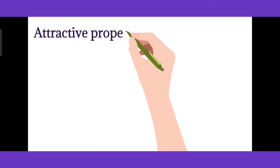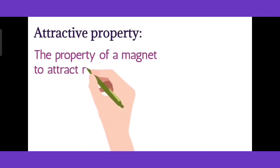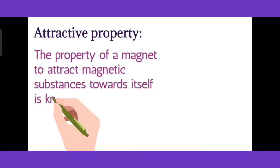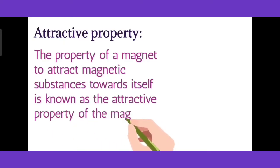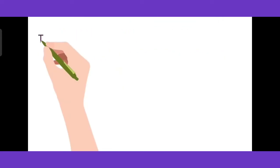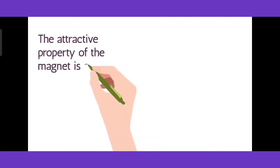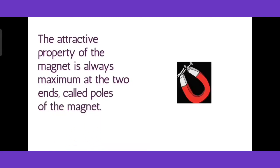Next is Attractive Property of Magnet. The property of a magnet to attract magnetic substances towards itself is known as the Attractive Property of the Magnet. The Attractive Property of the Magnet is always maximum at the two ends called Poles of the Magnet.